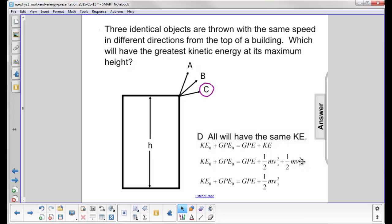The velocity in the y-direction will be zero at the maximum height, so we're left here with one-half mvx squared.